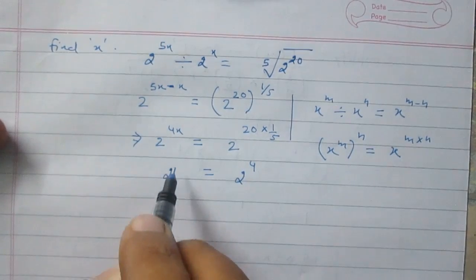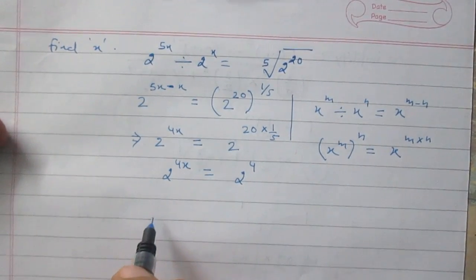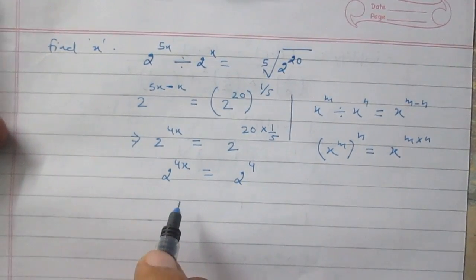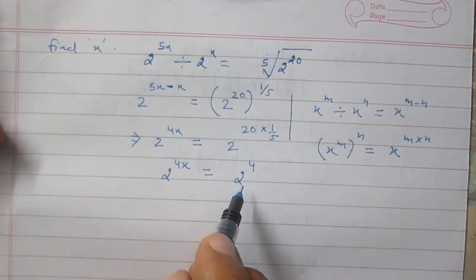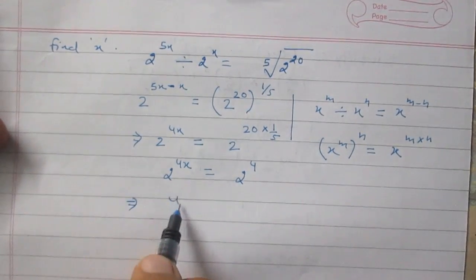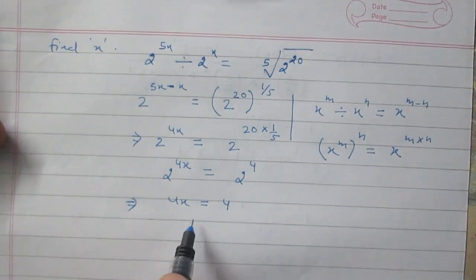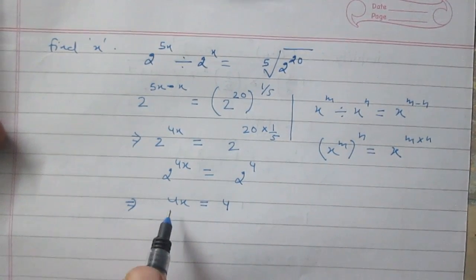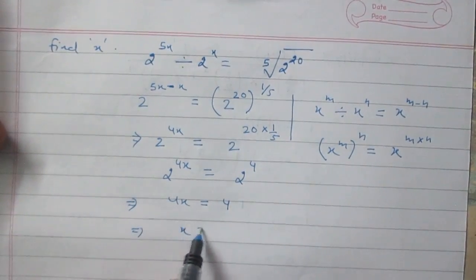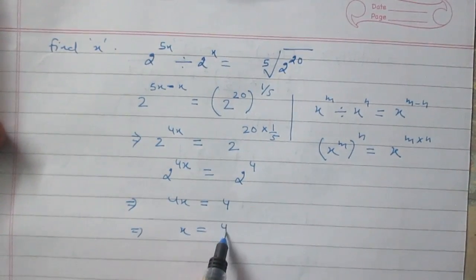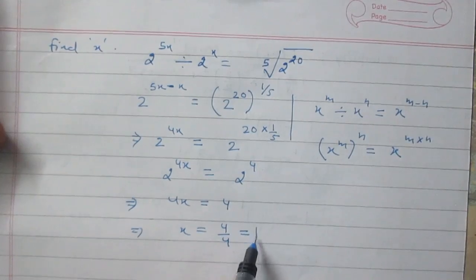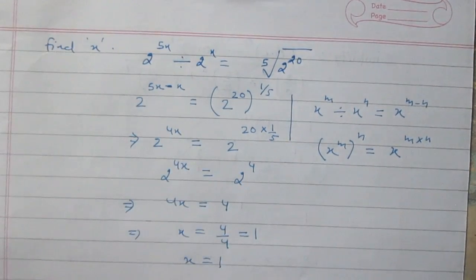The left hand side is 2 raised to the power 4x. So, on comparing this result, we can say that 4x must be equal to 4. So, it is a linear equation in variable x. On transposing 4 to the other side, we will get x is equal to 4 divided by 4, which is 1. So, the value of x is equal to 1.